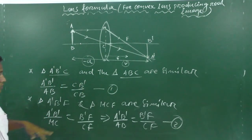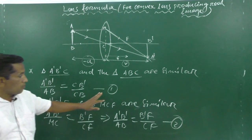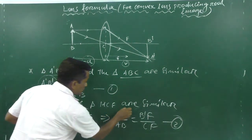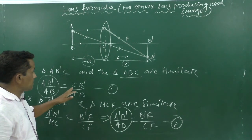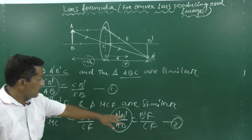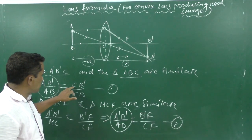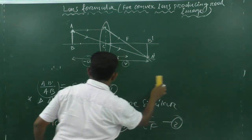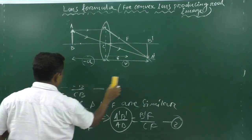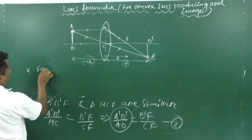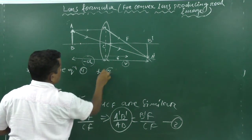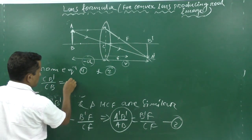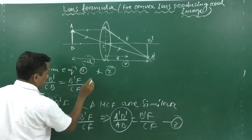By comparing Equation 1 and Equation 2, we can see that their left-hand sides are equal. Therefore their right-hand sides must also be equal. So CB dash / CB = B dash F / CF. Let this be Equation 3.